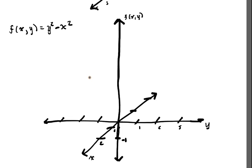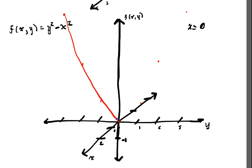Let's first draw the slice where x = 0. That's really easy. If x = 0, I just plug in values of y: at one I get one, at two I get four, at three I get nine — and similarly for negative values. So that slice looks like an upward parabola.